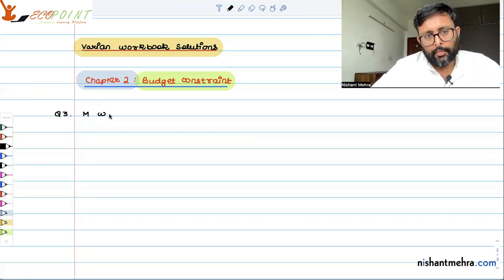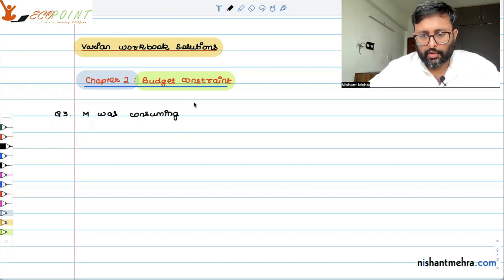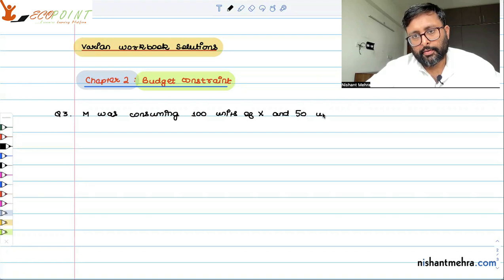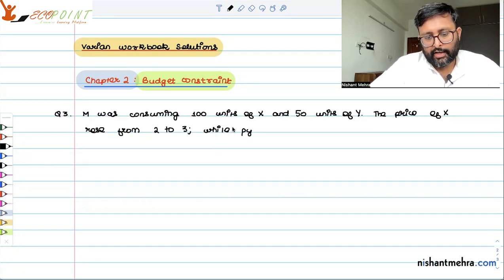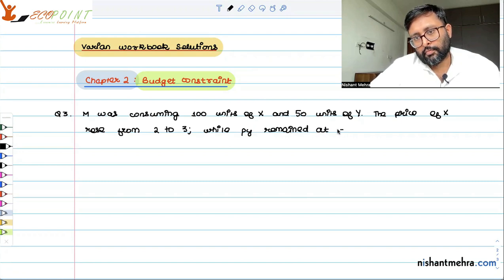M was consuming 100 units of X and 50 units of Y. Price of X rose from 2 to 3, while price of Y remained at 4.